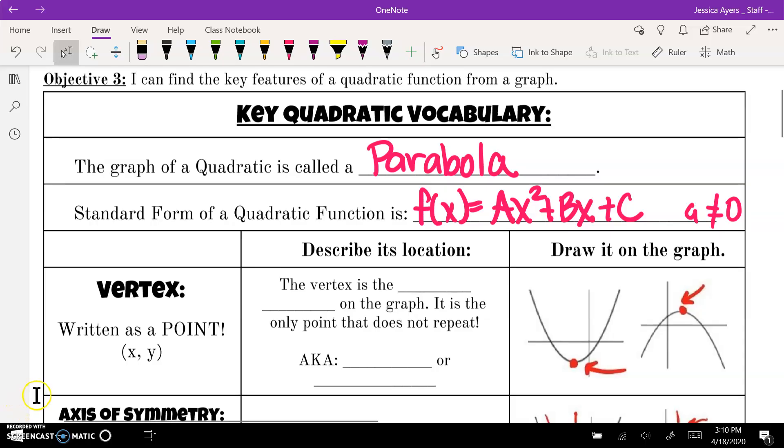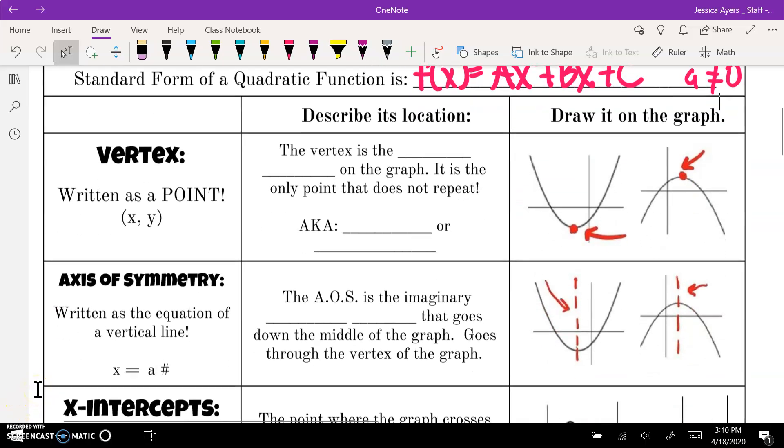In a quadratic, you have some key pieces. The first key piece is the vertex. The vertex is the turning point on the graph. It is the only point that does not repeat. It is the minimum or maximum on your graph. You will always write this as a point because it is a point. And you write points as x comma y. We see that it's at the very top or very bottom of our graph.